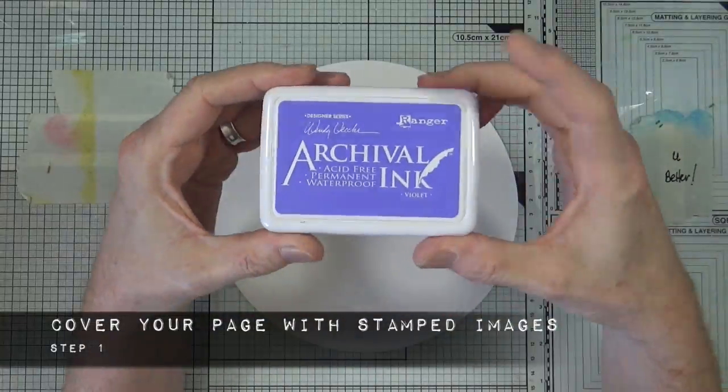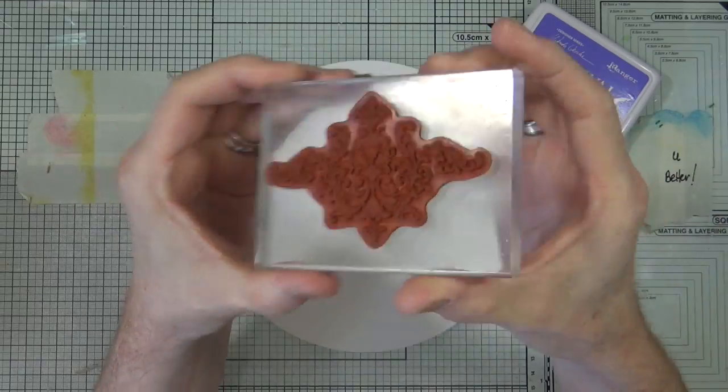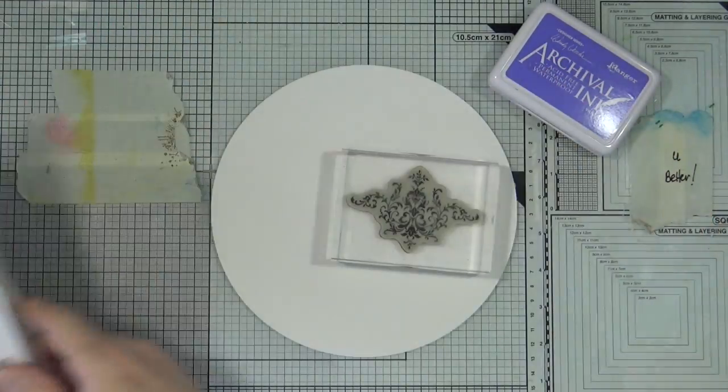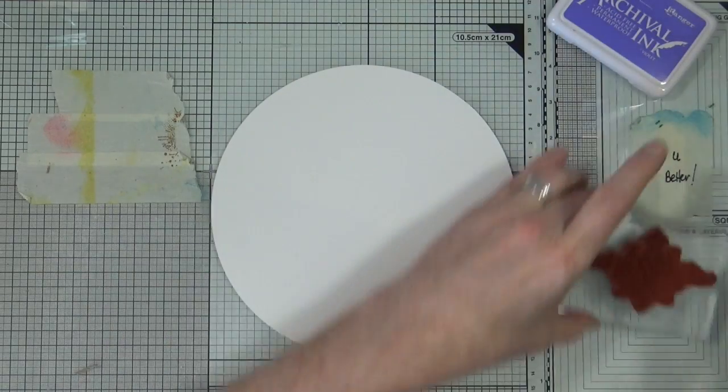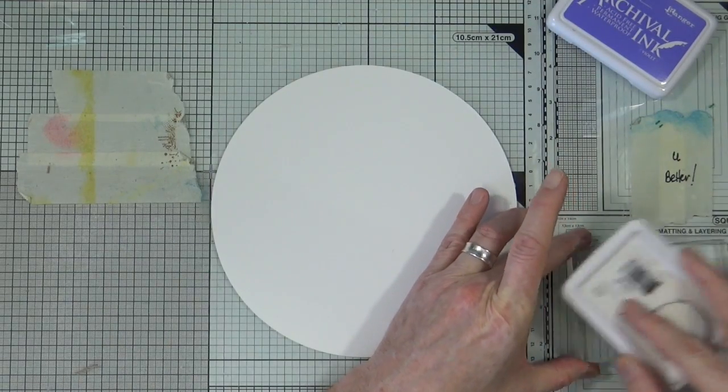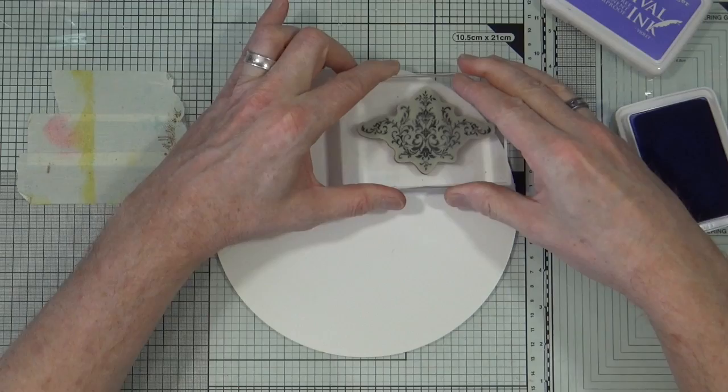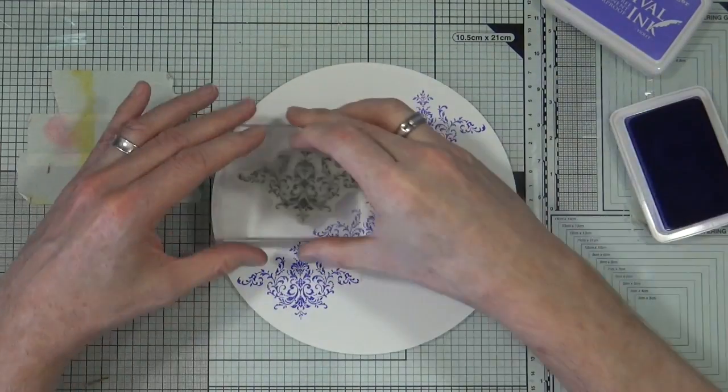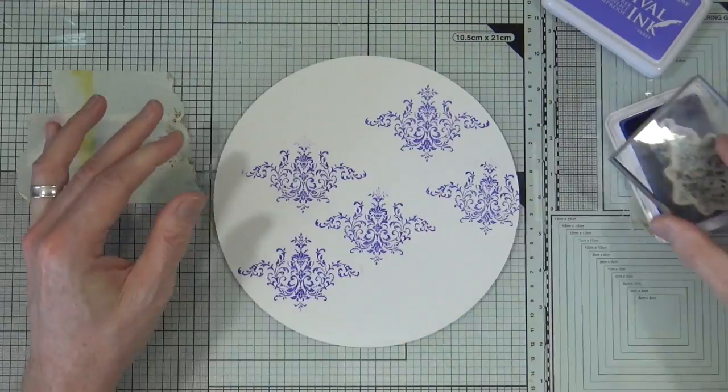So I'm beginning today's page in my circle journal, and I'm using the Bliss Stamping Up set. I'm using that floral flourishy one. I'm using the Violet Archival Ink from Ranger. I'm going to stamp the pattern all over the page, and try and build up a kind of repeating pattern, but not being too exact with it.